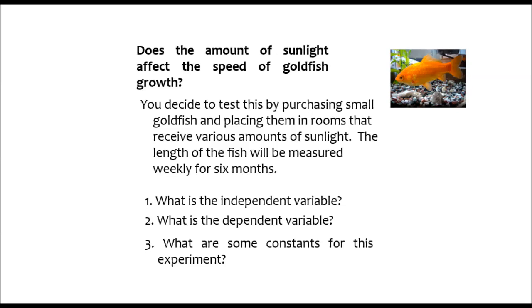To understand more about variables and how they are important in experiments, let's look at this example. Does the amount of sunlight affect the speed of goldfish growth? You decide to test this by purchasing small goldfish and placing them in rooms that receive various amounts of sunlight. The length of the fish will be measured weekly for six months.